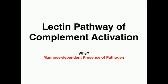In the previous video, we talked about the classical pathway of complement activation. The classical pathway requires antibodies for it to work. And we know that upon initial exposure to an antigen, we don't have antibodies for it — it takes time to develop those. So the classical pathway is not going to be the first pathway activated, particularly when we have initial exposure to an antigen. When we have initial exposure, we're going to have to fight that with different pathways of complement activation.